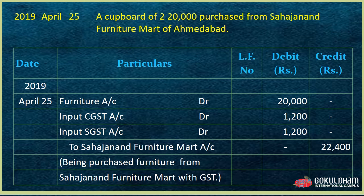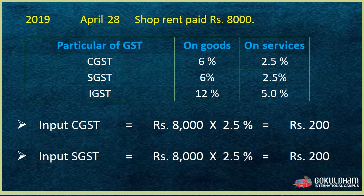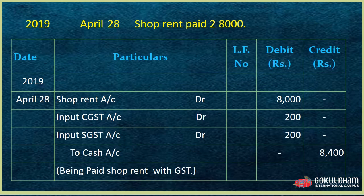Next transaction: Shop rent paid ₹8,000. This is a service expense, so GST on service applies at 2.5% CGST and 2.5% SGST. Input CGST = ₹8,000 × 2.5% = ₹200; Input SGST = ₹8,000 × 2.5% = ₹200. Journal entry: Shop Rent Account debit ₹8,000, Input CGST debit ₹200, Input SGST debit ₹200, To Cash Account ₹8,400. Narration: Shop rent paid with GST.